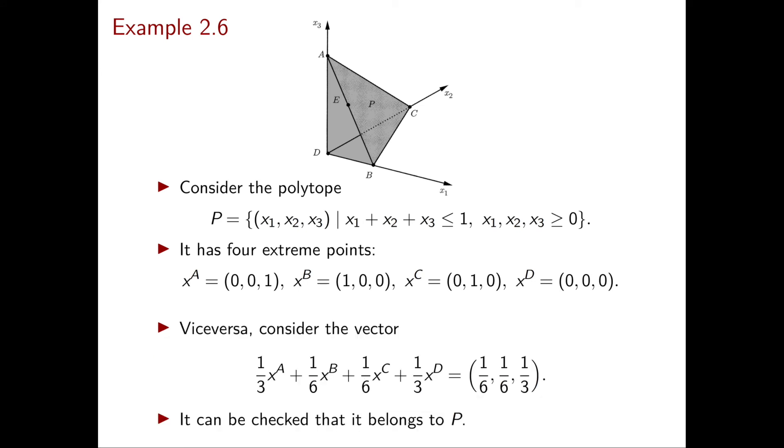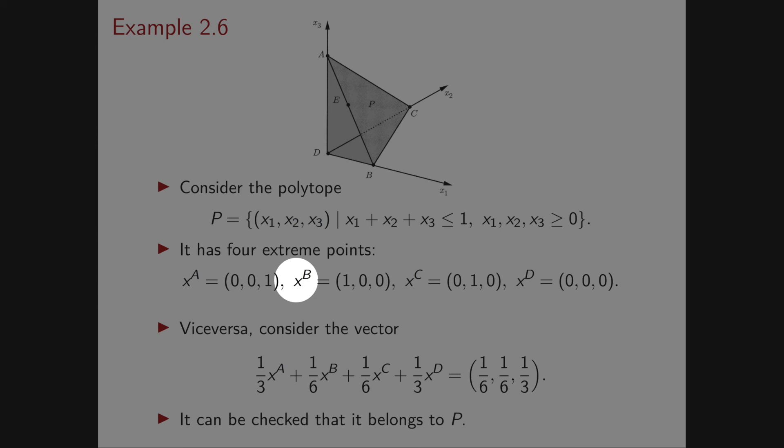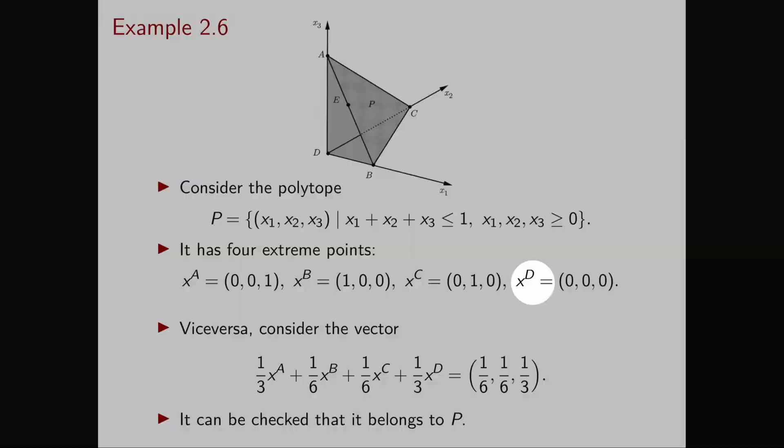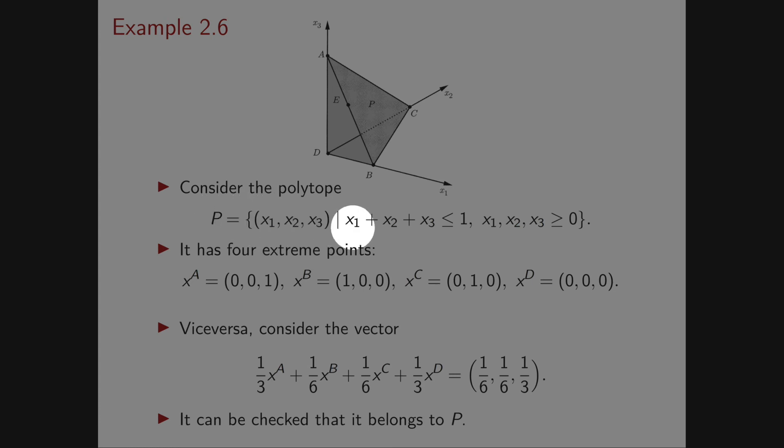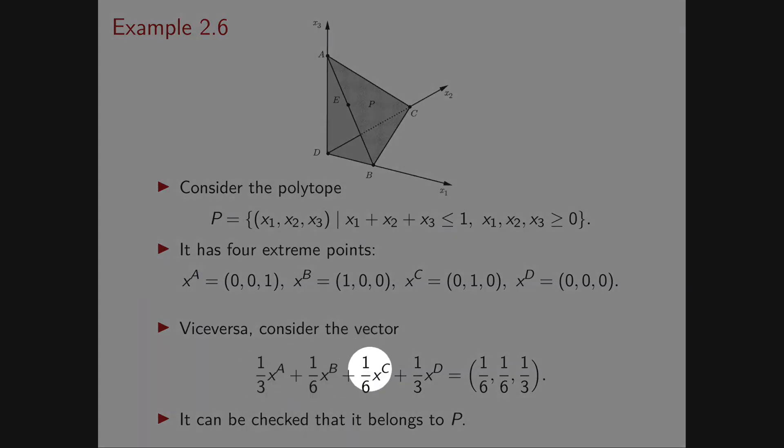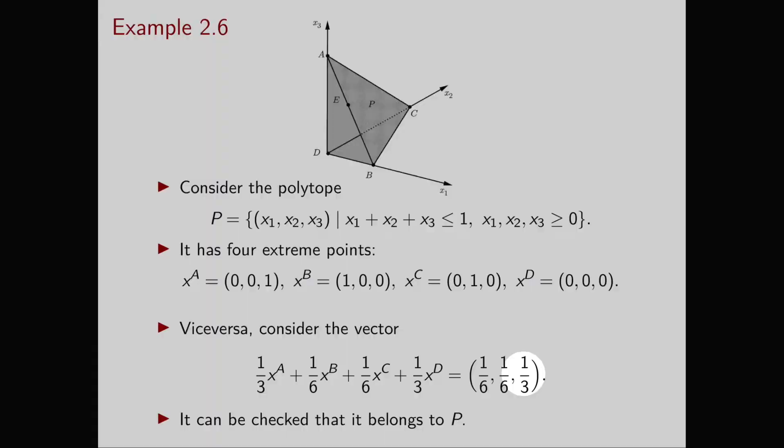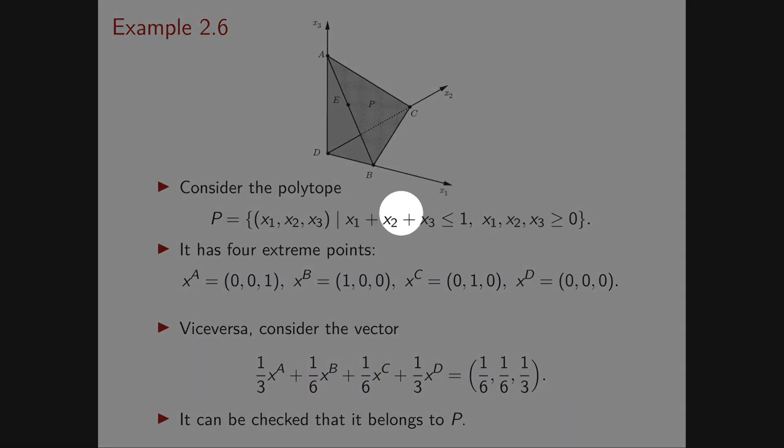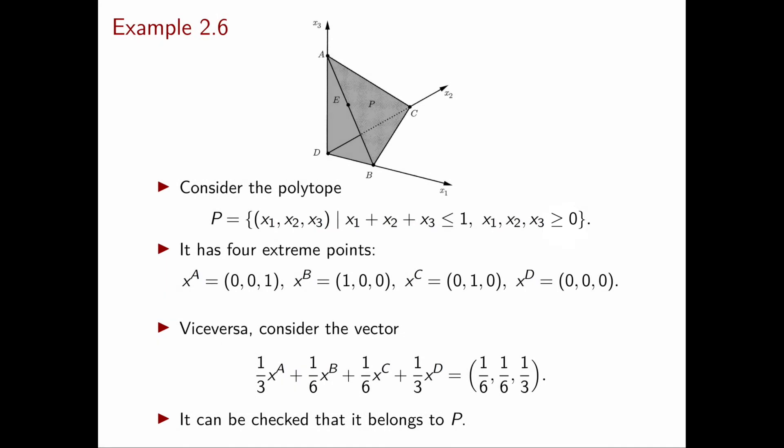Next, let's see the opposite direction: pick any convex combination of these four extreme points and check that it's in P, satisfying all constraints defining P. We start from the λ's—pick any four that sum to 1 and are non-negative, for example 1/3, 1/6, 1/6, and 1/3. The convex combination is the vector (1/6, 1/6, 1/3), which belongs to P because it satisfies all the constraints.